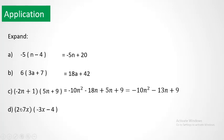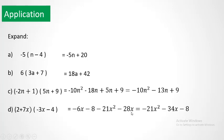We have similar terms: minus 18n and plus 5n, which reduces to minus 13n. Similarly, we have two factors of more than one term, so multiply each term of the first by each term of the second. Similar terms are minus 6x and minus 28x; adding them gives minus 34x. The answer is minus 21x squared minus 34x minus 8.